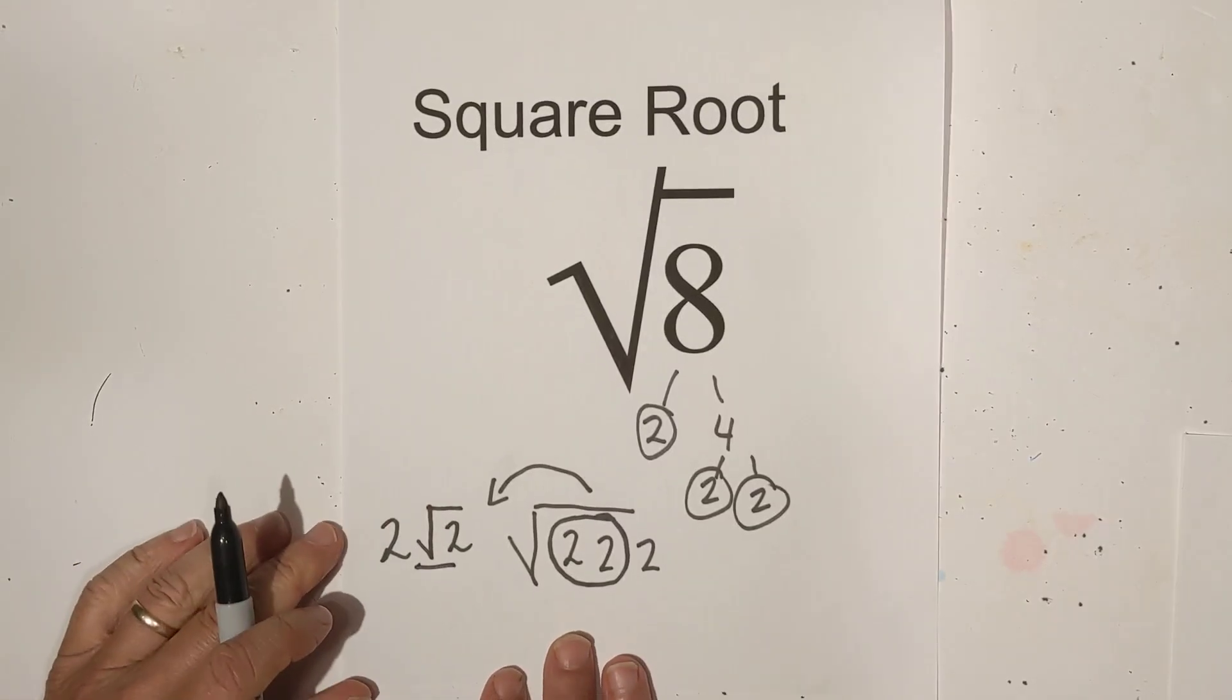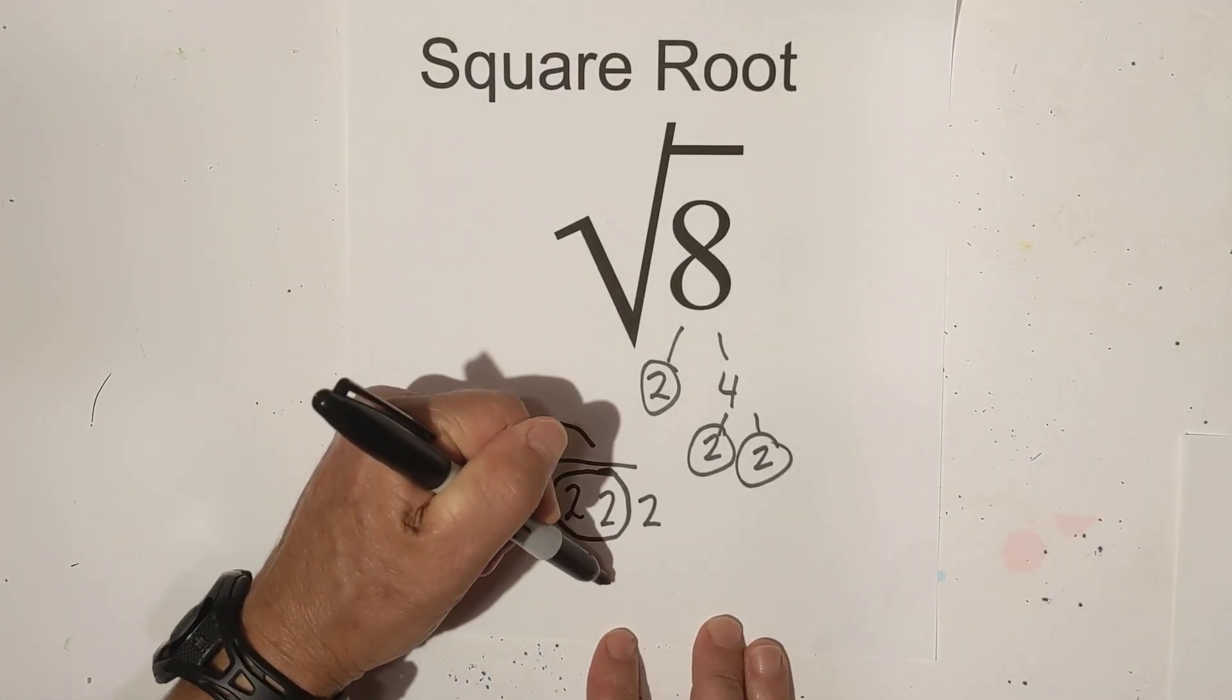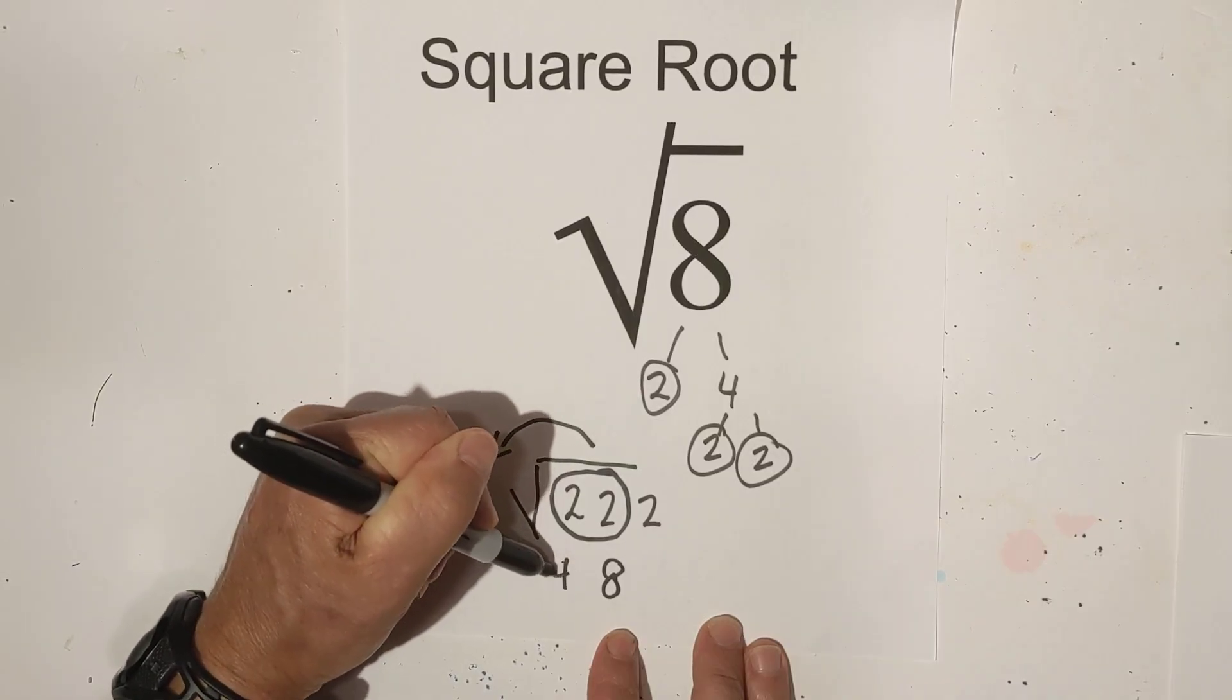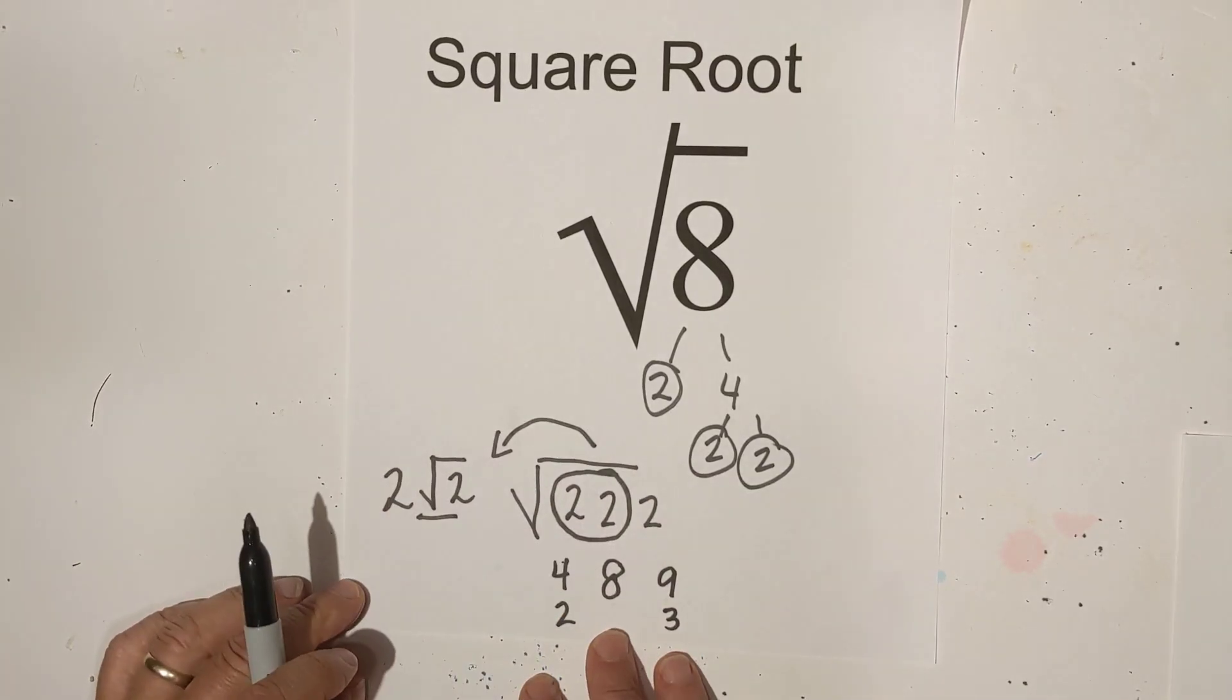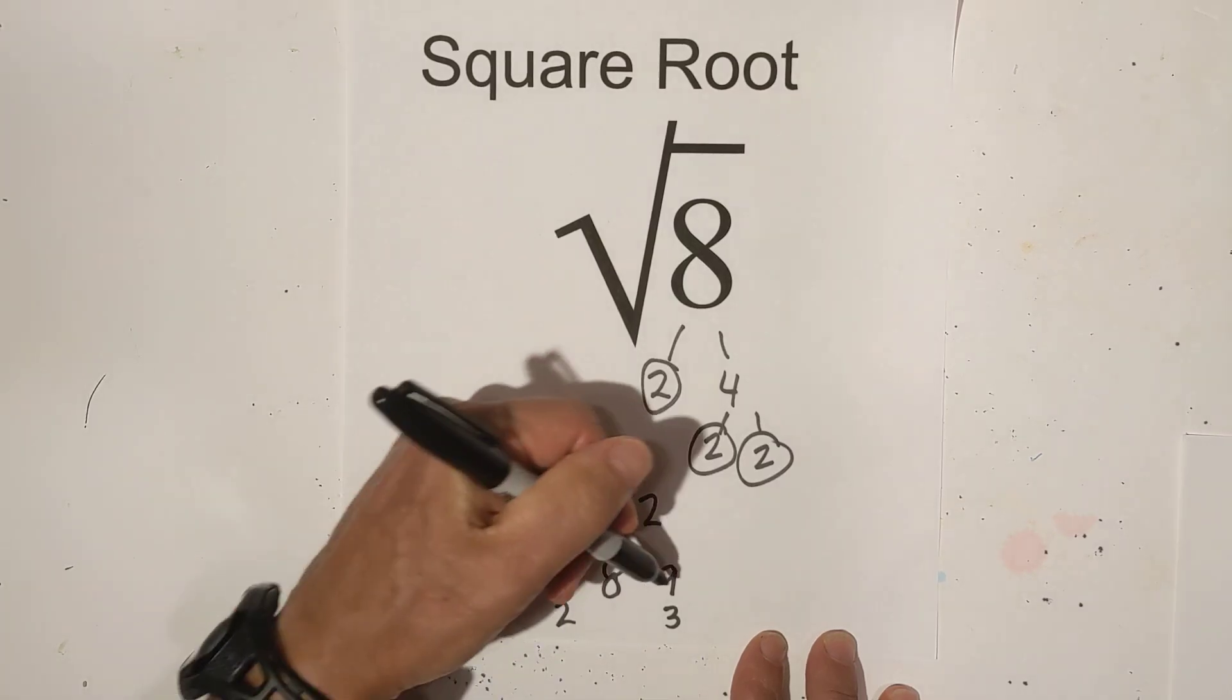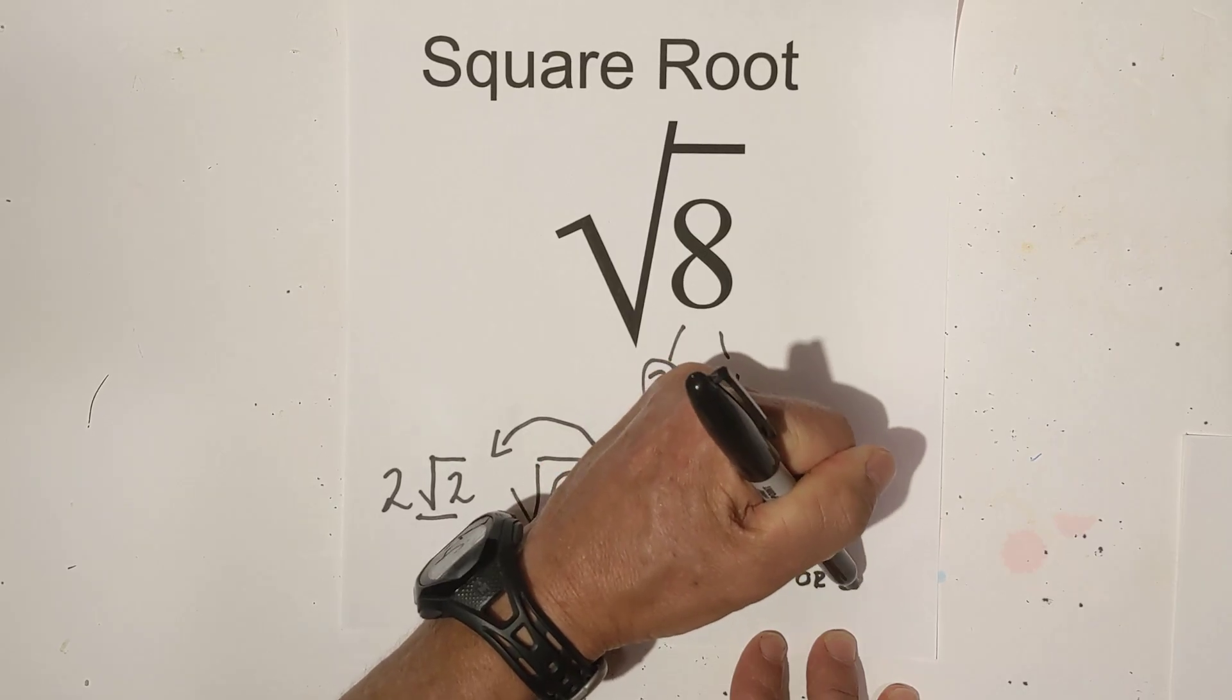Now, here's a simple way to estimate finding the square root. Let me move this up a little bit. Okay, so we have 8, and I know the square root of 4 is 2, and the square root of 9 is 3. So it's going to be somewhere between these two numbers. Since it's closer to 9, I could estimate maybe 2.7 or maybe 2.8.